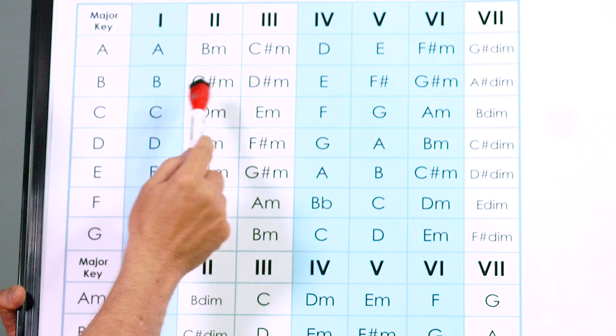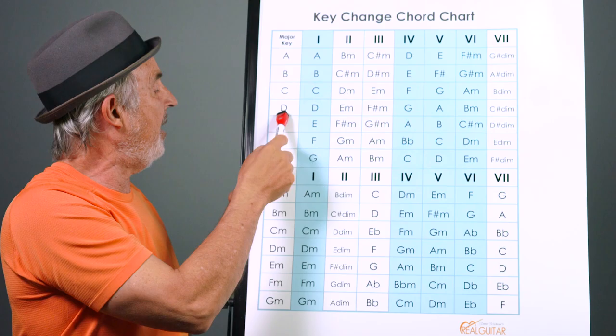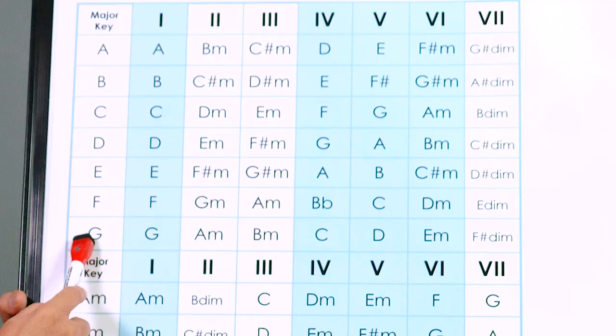So let's say you want to go even higher than that. Let's go all the way up to G, the key of G. So that's quite a bit higher. Every time you play the C chord now, you'd go down the column and you'd play a G chord.